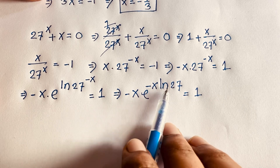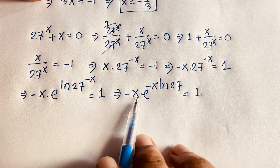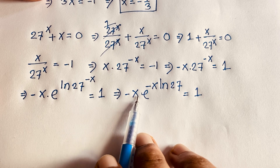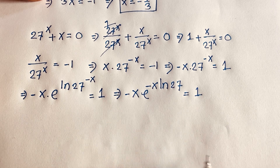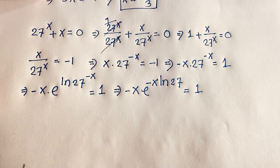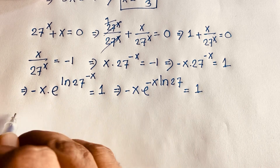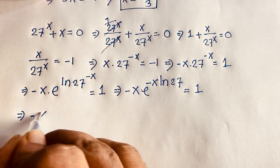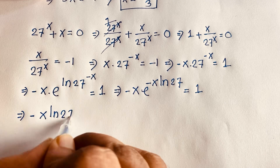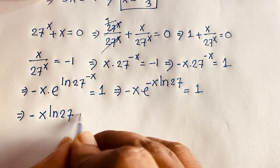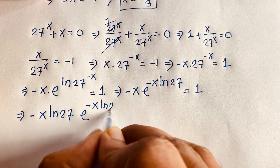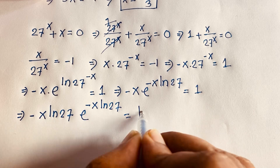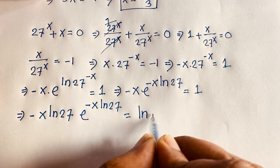Here we have minus x and the exponent is minus x · ln 27, but there is no ln 27 factor in front. So I multiply both sides by ln 27 to match the Lambert W form. We find: minus x · ln 27 · e^(minus x · ln 27) equals ln 27.